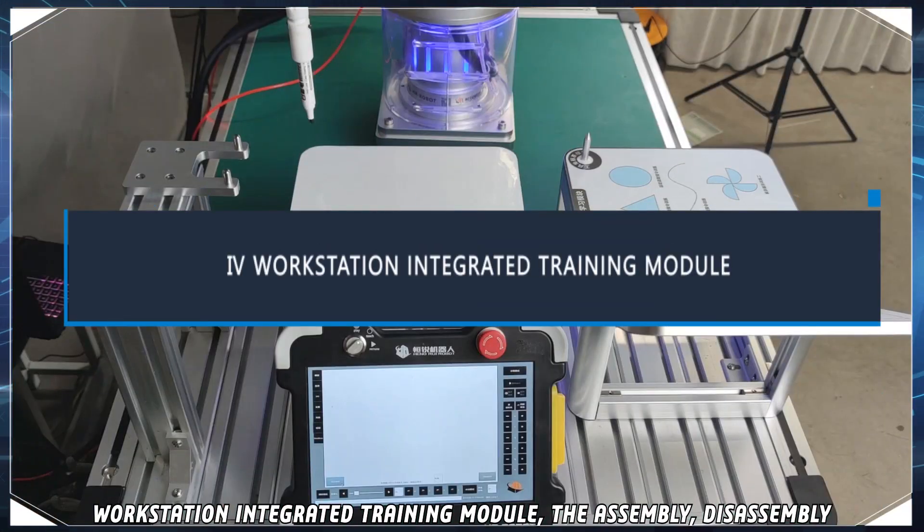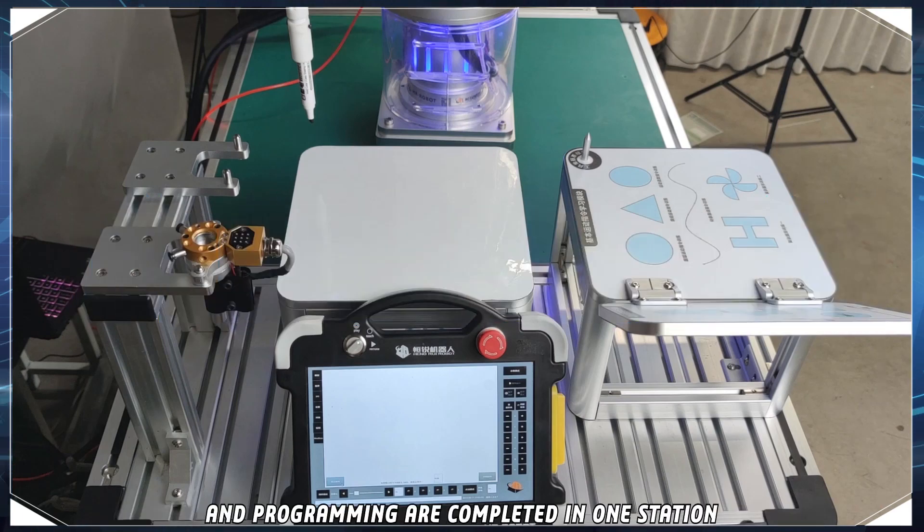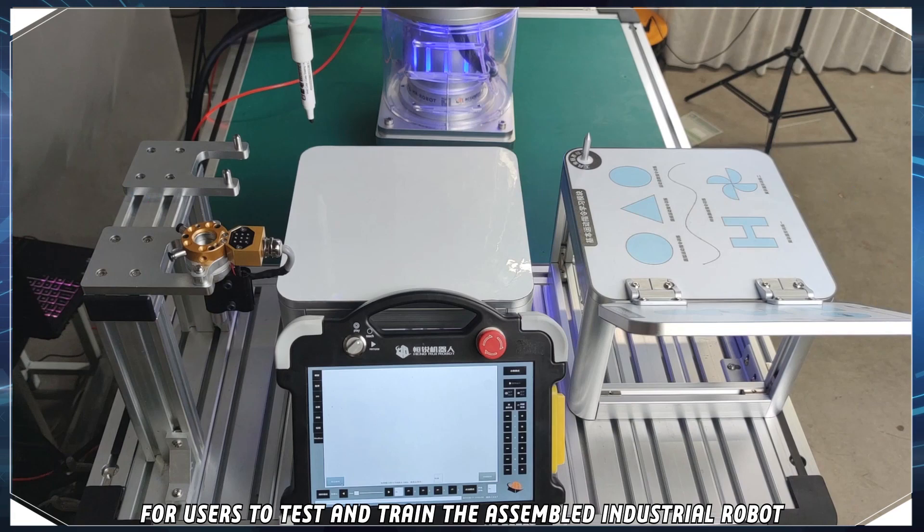Workstation integrated training module. The assembly, disassembly, and programming are completed in one station. The workstation is comprised of two industrial robot training modules for users to test and train the assembled industrial robot.